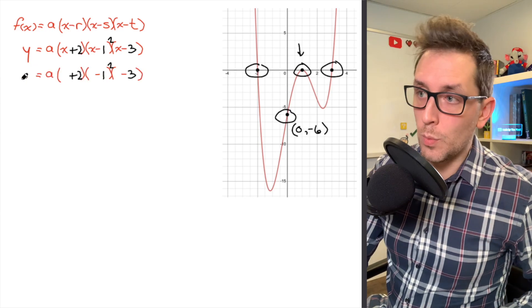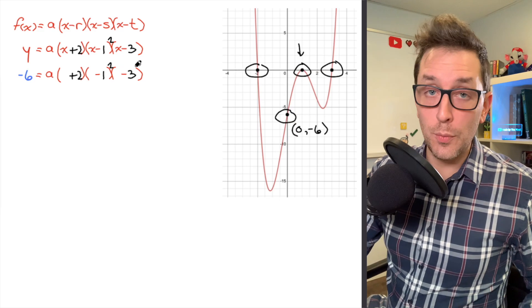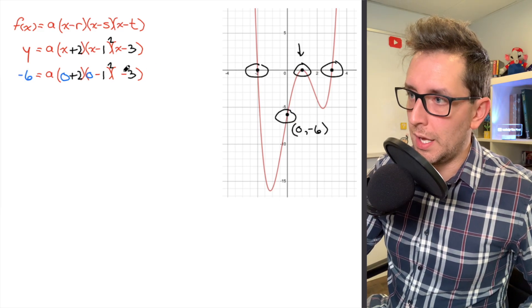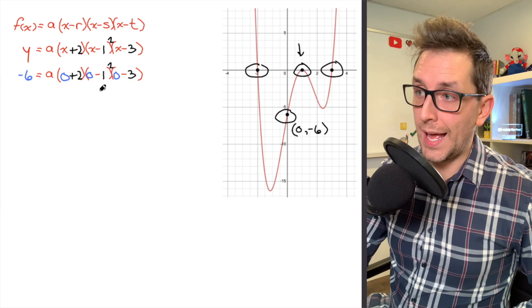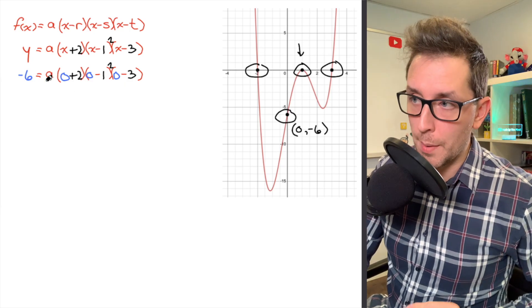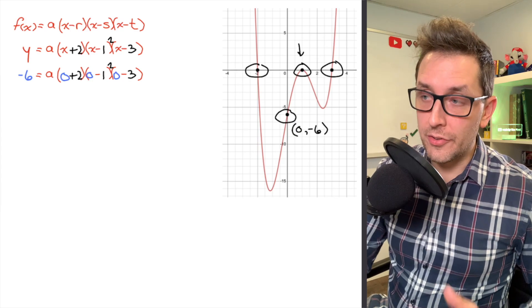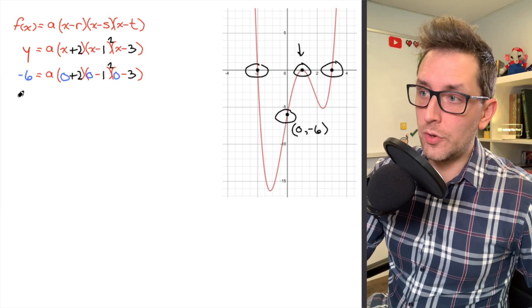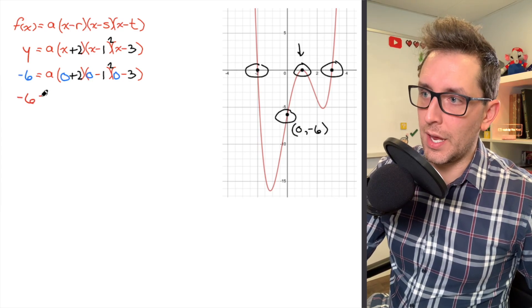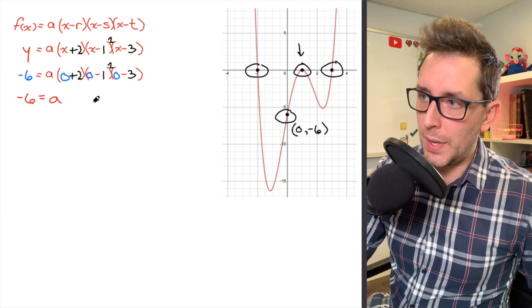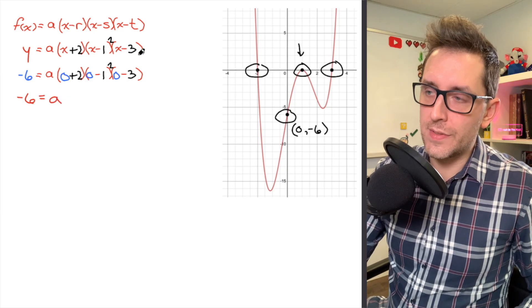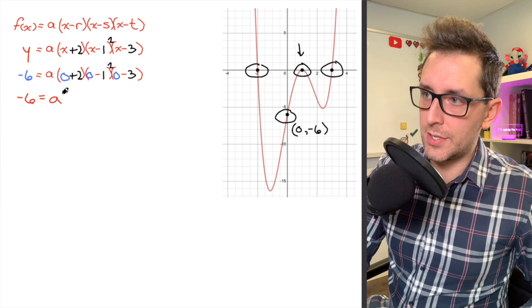So I'm going to replace y with a negative 6, and wherever you see an x, I'm going to place the value of 0. Now that is going to produce an expression that has only one unknown, that is our parameter of a. So all we really have to do here is simplify our expression and solve for the value of a. So we're going to go ahead and do that right now. I'm going to keep that negative 6 the same. I've got my a parameter. I'm not going to pick on that.